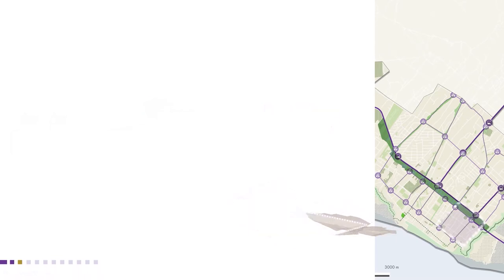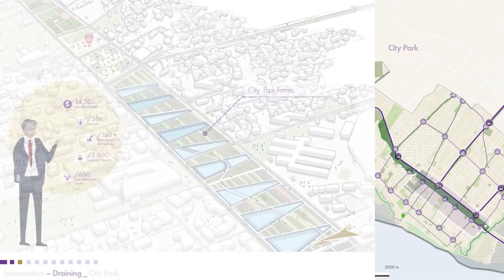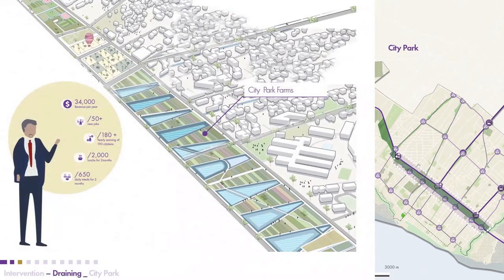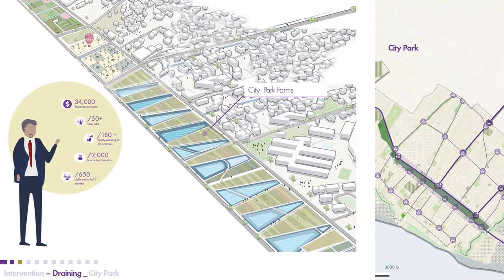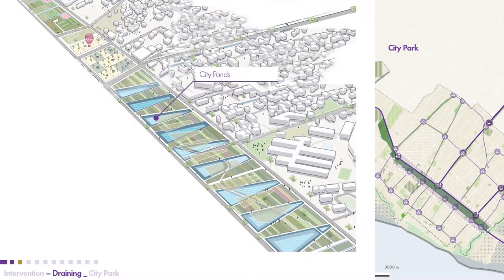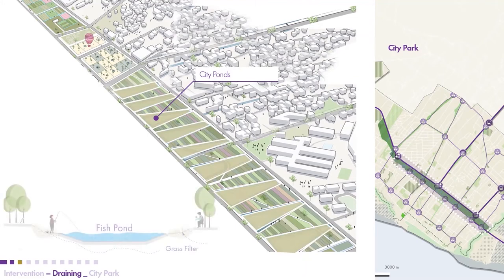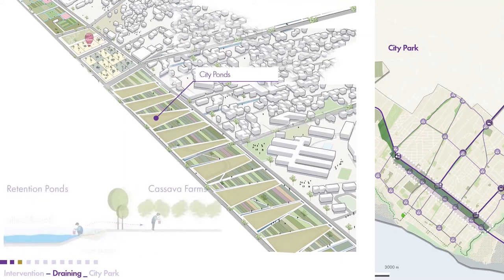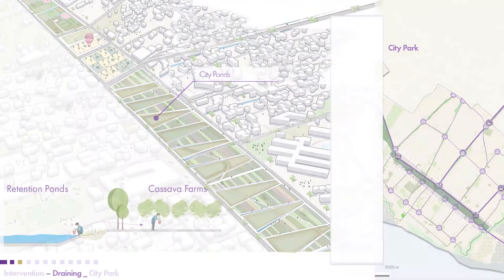Within the city park, we looked at creating a park that can either feed people or create jobs for volunteers. We can create around 150 new jobs or provide around 2,000 meals for two months. The city ponds also complement the city parks and serve as a way of draining the whole city during floods. From here we move to the barrier scale intervention.